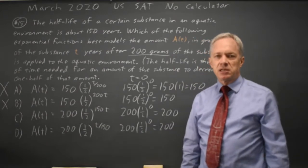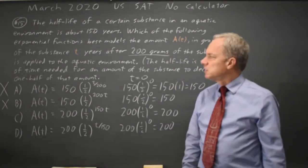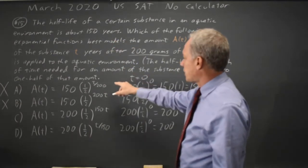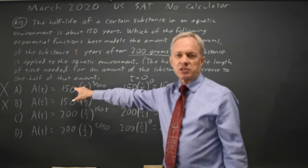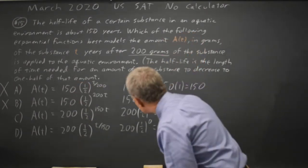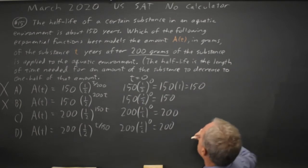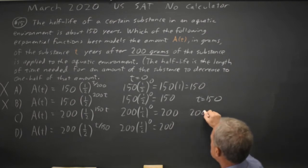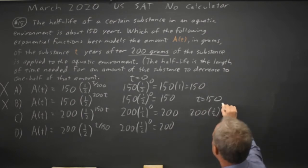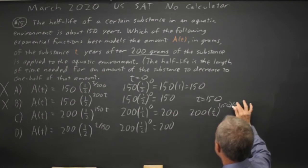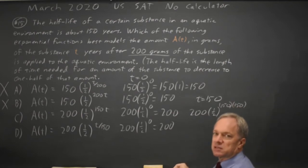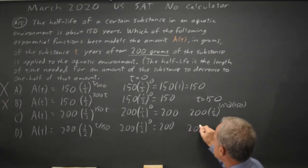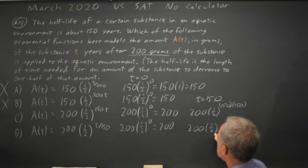Let's check choices C and D at 150 years. Since 150 years is one half-life, and after one half-life half the original amount is left, at 150 years we should have 200 times one-half, which is 100 grams. At t equals 150, choice C gives us 200 times one-half to the power of 150 times 150. Choice D gives us 200 times one-half to the t over 150.